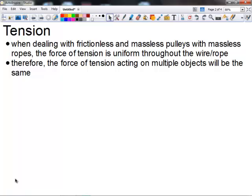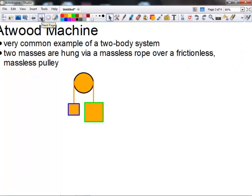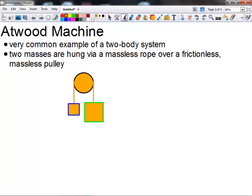We have two main examples of multiple body force problems. The first is referred to as an Atwood machine. And the Atwood machine consists of two masses that are being connected over a massless rope, or by a massless rope, over a frictionless and massless pulley.